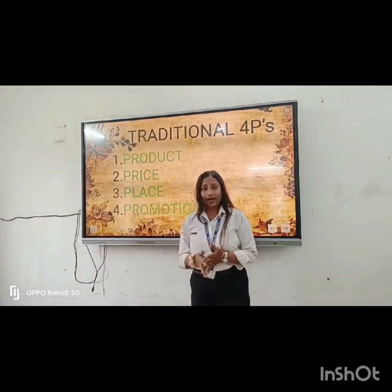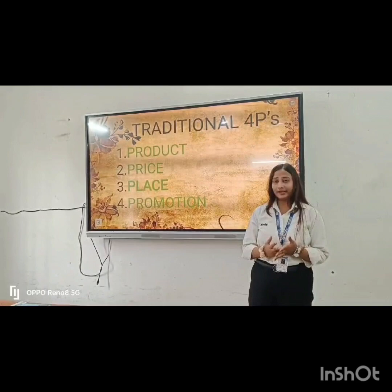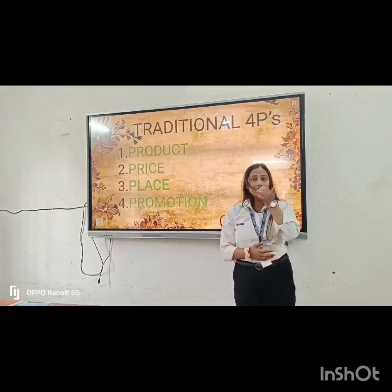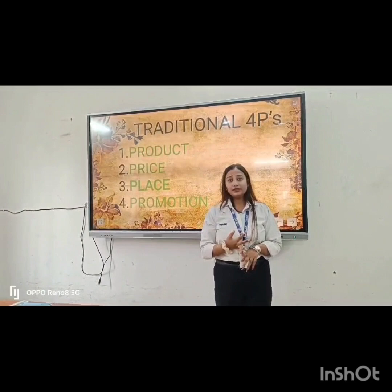The second element is price — price is the amount the consumer wants to pay. Price includes list price, discounts, credit terms, and so on. The third element is place — this is where the customers can access or purchase the product. Place includes channels, promotions, and so on.